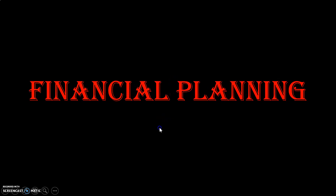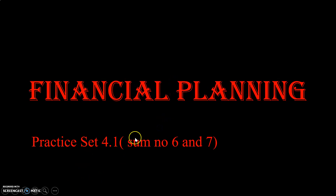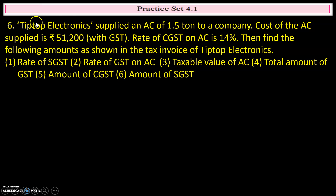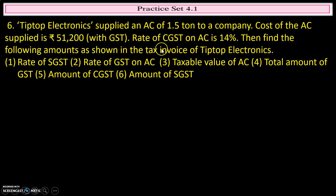Hello students. In this video on financial planning, we will be doing practice exercise 4.1, sum number 6 and 7. Let us start with sum 6. According to this question, TipTop Electronics supplied an AC of 1.5 ton to a company. The cost of the AC supplied is ₹51,200 with GST. The rate of CGST on AC is 14 percent. Find the following amounts as shown in the tax invoice of TipTop Electronics.